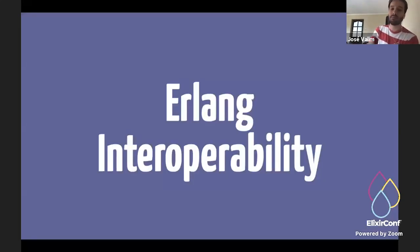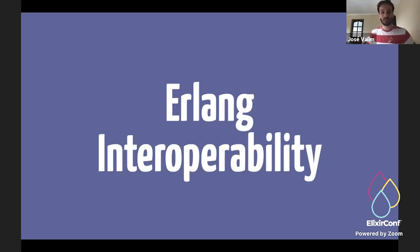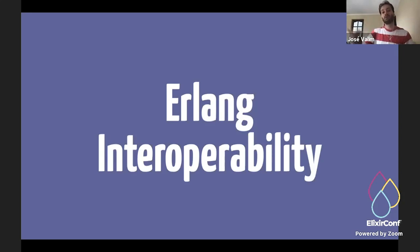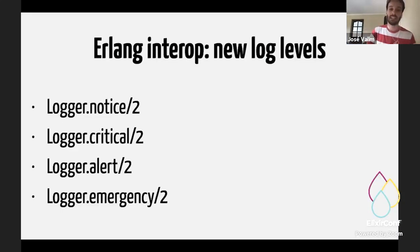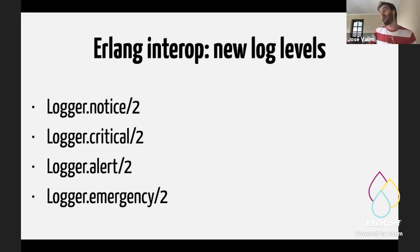So Erlang Interoperability. In Elixir 1.10, we started to require Erlang 21, and one of the reasons for that is because we wanted to integrate directly with Erlang's new logger. We set up this basic integration and now we are continuing to improve on it. So in Elixir 1.11, we are going to get four new log levels: notice, critical, alert, and emergency. We are now mapping to all Erlang log levels, which map to syslog log levels.